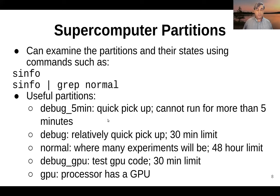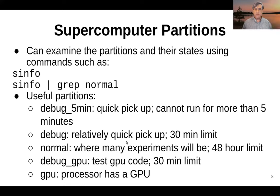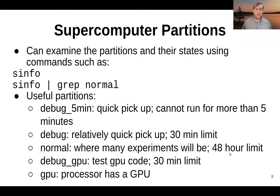There is also a debug partition — the same deal, it tends to get picked up relatively quickly, with a 30-minute time limit. The normal partition is where you'll be doing most of your work, and wait time can be longer here. There is a 48-hour time limit on executing jobs within the normal queue.